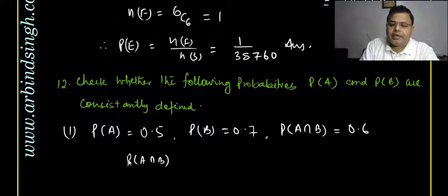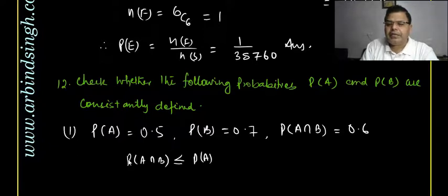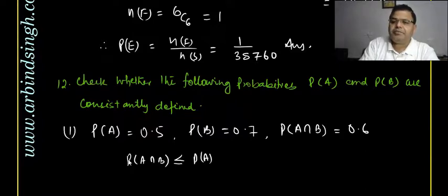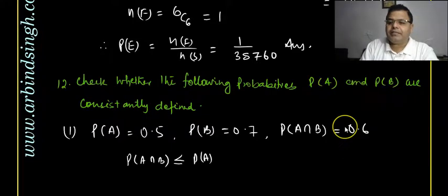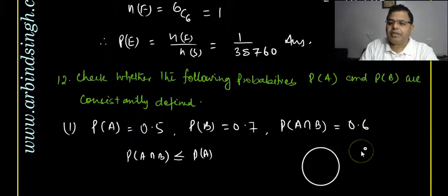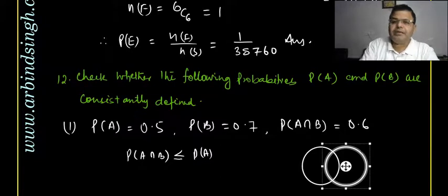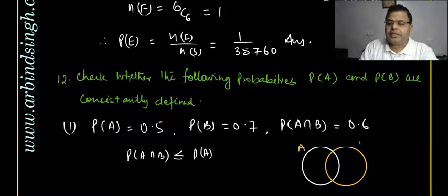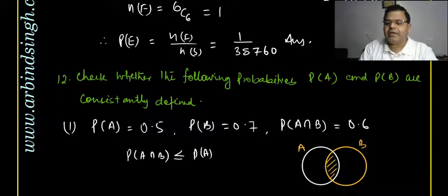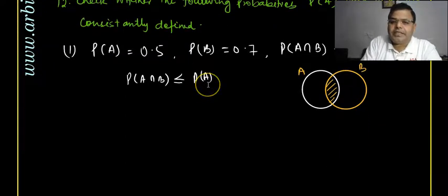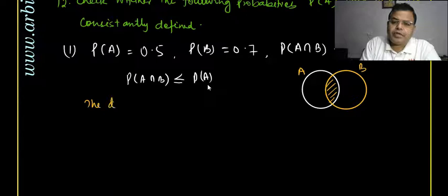P(A ∩ B) may be equal to P(A) but cannot be greater than P(A). Here P(A ∩ B) = 0.6 is greater than P(A) = 0.5, which is not possible because P(A ∩ B) is the common area between two sets and always satisfies P(A ∩ B) ≤ P(A) and P(A ∩ B) ≤ P(B).